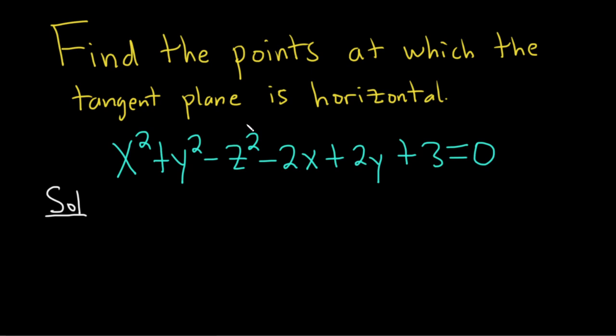So first we have to understand what it means for a tangent plane to be horizontal. If it's horizontal it basically means it's flat. Pretend that the tangent plane is laying here. That would mean that the normal vector has to go straight up from the tangent plane. So its coordinates should look something like 0, 0, c, where c is not equal to 0.